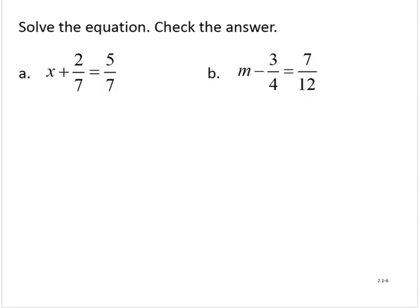Solve the equation. Check the answer. x plus 2 sevenths is equal to 5 sevenths.